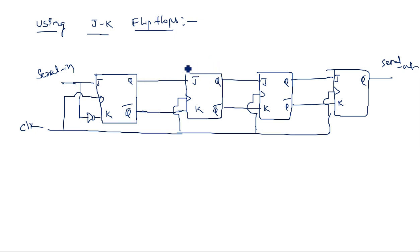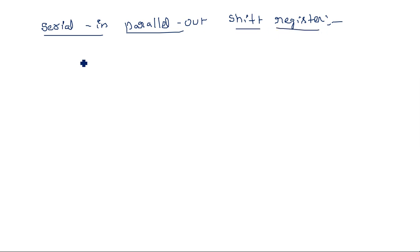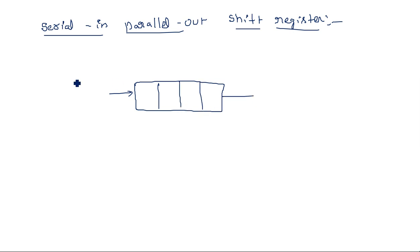In serial-in serial-out, there are no intermediate outputs taken. The data may be entered from the left-hand or right-hand side and collected from the other side — no intermediate data is taken. If intermediate data is taken, it becomes parallel output. That is what we are going to see next: serial-in parallel-out shift register. Data enters serially but here we take outputs from all flip-flops at the same time.